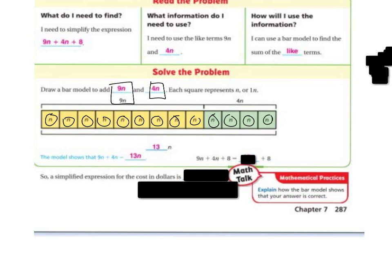The model shows that it's 13n. Because I can count them. So let's count them just to make sure. 1, 2, 3, 4, 5, 6, 7, 8, 9, 10, 11, 12, 13. So the answer is going to be 9n plus 4n plus 8 is 13n plus 8. So if I simplify that in expression, it would be 13n plus 8 would be the expression that would be simplified by combining my like terms. I'm not solving for n yet, I'm just simply combining the like terms.